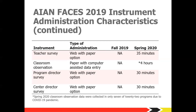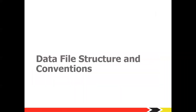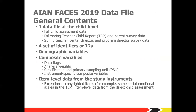Now I'll get into more specifics about the data file structure and conventions. We created one child-level data file that includes data from fall child assessments, fall and spring teacher-child reports and parent surveys, and spring teacher, center director, and program director surveys. The data on this file, properly weighted, can represent Region 11 as a whole. The file contains identifier variables that uniquely identify each case — each sampled child, classroom, center, and program — as well as demographic variables such as the child's age, gender, and race/ethnicity. We also include composite variables, data flags indicating whether there are completed instruments for the child, and weight variables for various types of analyses.